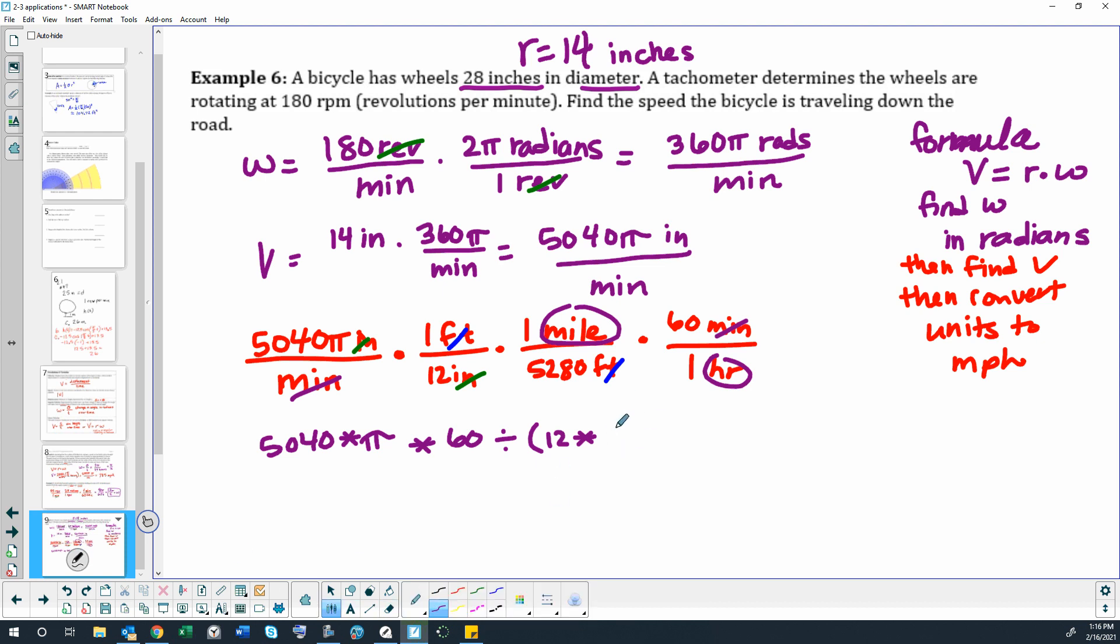So you can put those in parentheses so that you're dividing both of them, you can multiply them together first and get that number before you divide, or you could simply just use the division symbol between both of those numbers. So at this point let's double check. Make sure you're putting these in your calculator correctly. So 5040 times π times 60 divide 12 divide 5280.